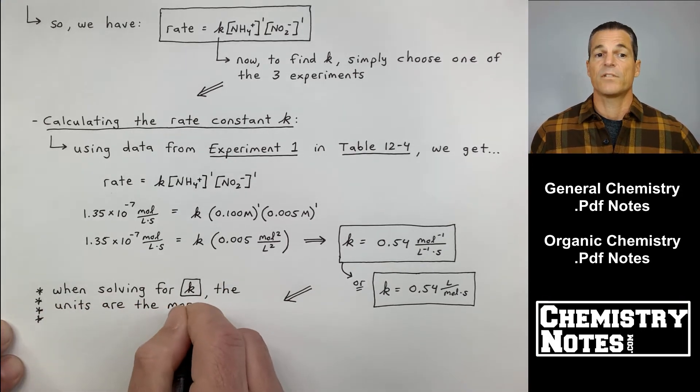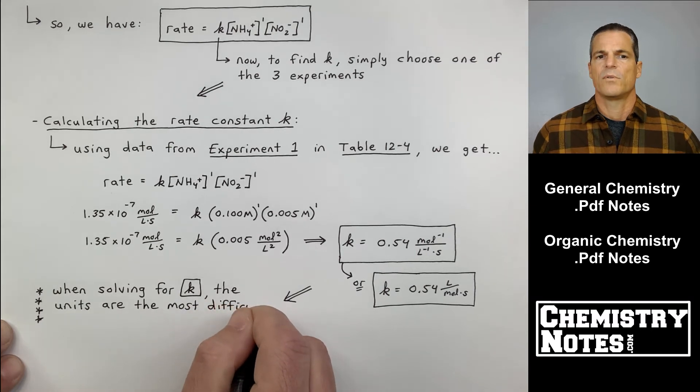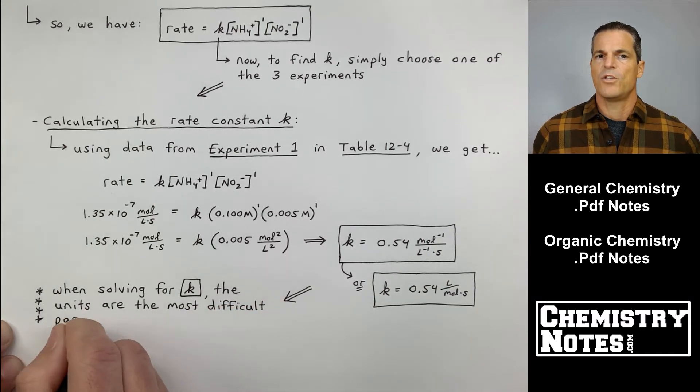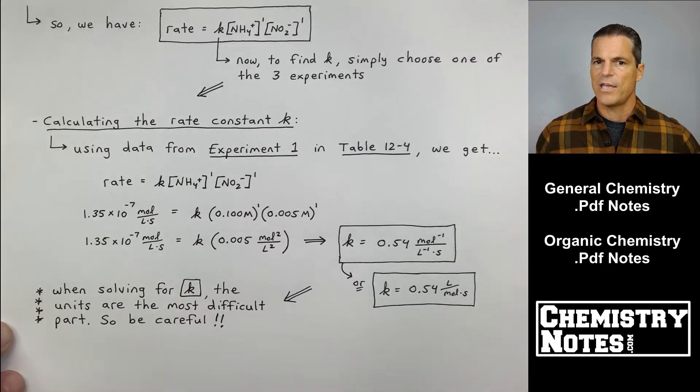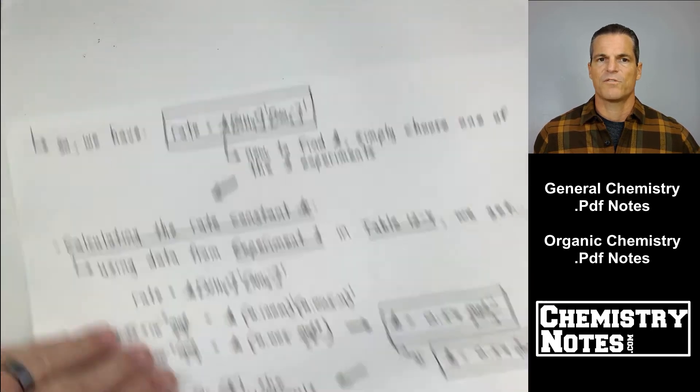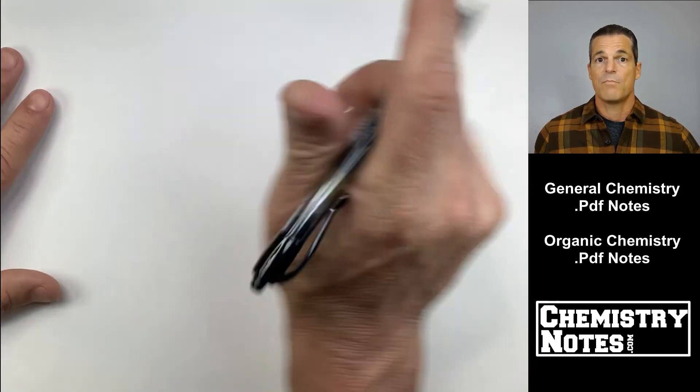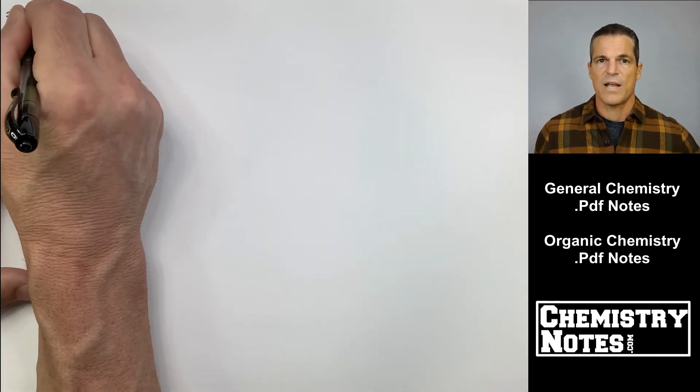That's not always your units for K, however. We'll learn that as we do more examples. Four stars here, so it must be important. When solving for K, the units are the most difficult part. Be careful. Don't try to memorize my units for K right there because the units for K change all the time based on what order you are in each reactant.